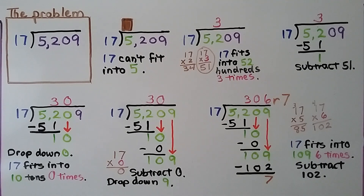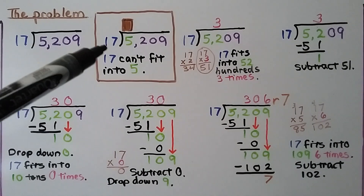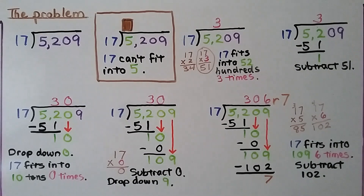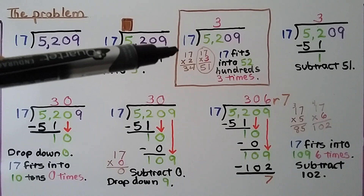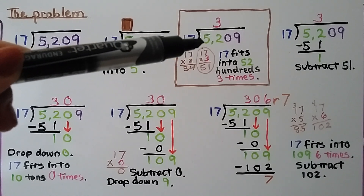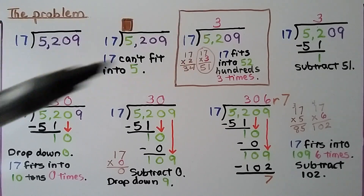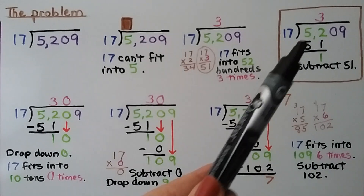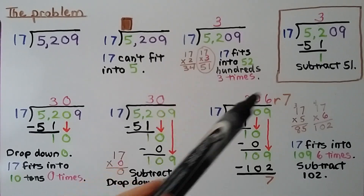Here is a long division problem broken into several steps: 5,209 divided by 17. 17 cannot fit into 5, so the answer won't go above the 5. But 17 can fit into 52 hundreds. We try 17 times 2 — that's 34, too low. We try 17 times 3 — that's 51, a good amount to subtract from 52. So the 3 goes above the hundreds place. 17 times 3 is 51; we subtract and get 1.